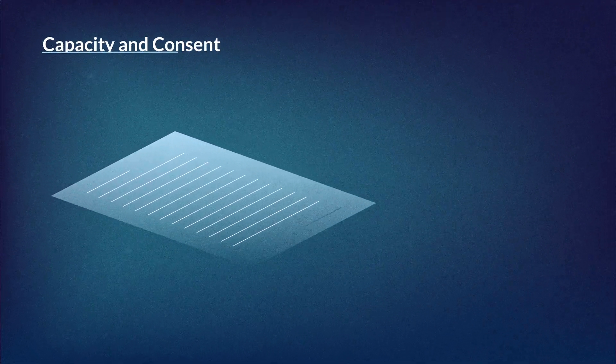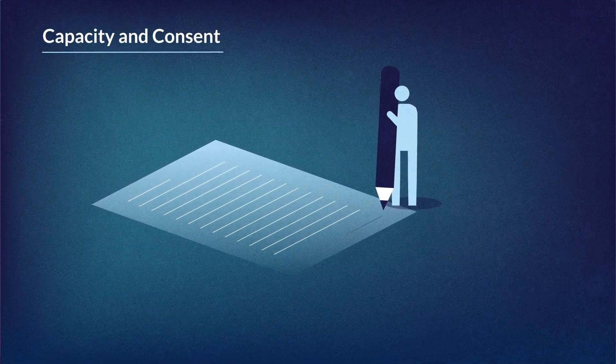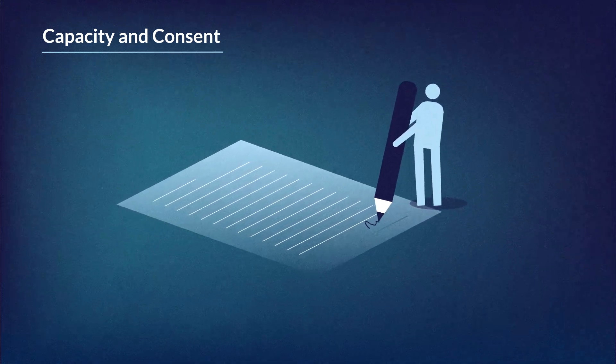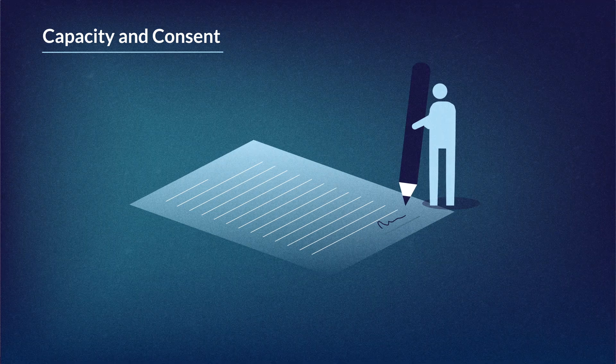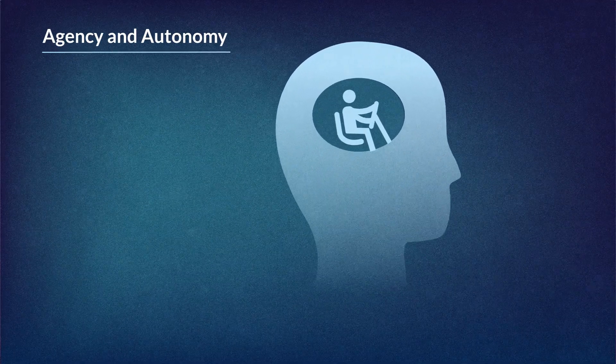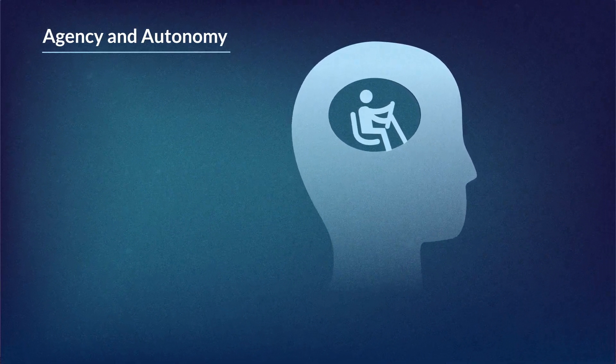Capacity and consent: How can we ensure people are able to understand and make decisions about how to choose to interact with brain technologies? Agency and autonomy: How will brain technologies affect our sense of self and our free will?